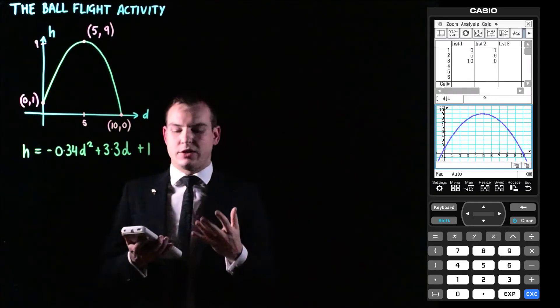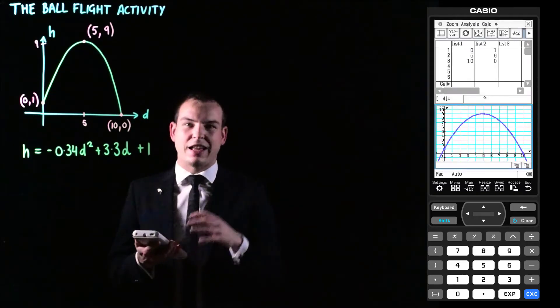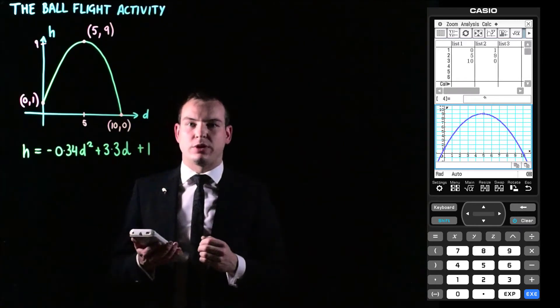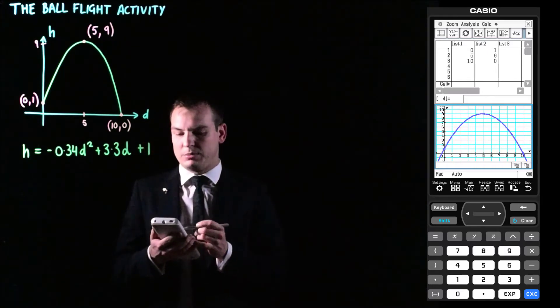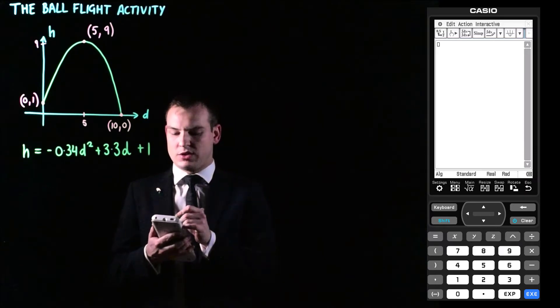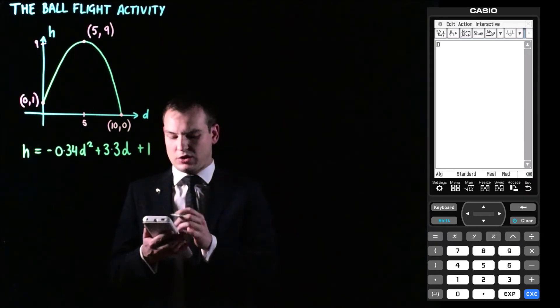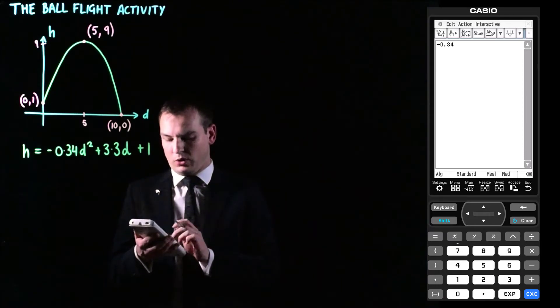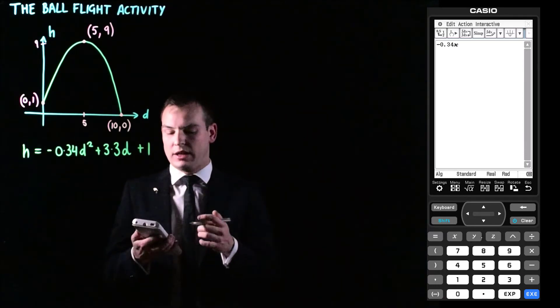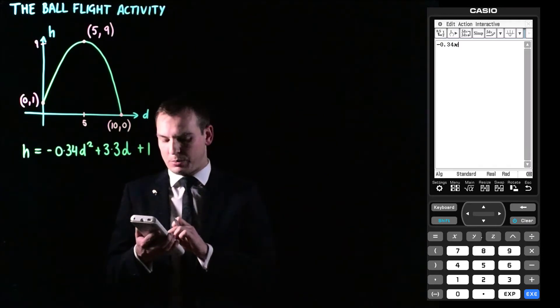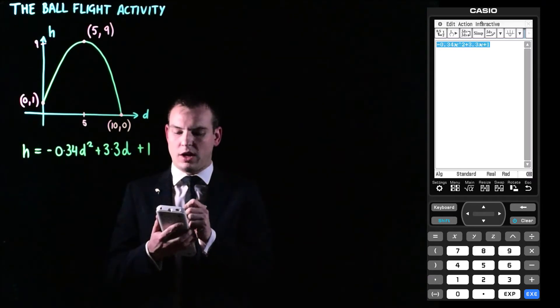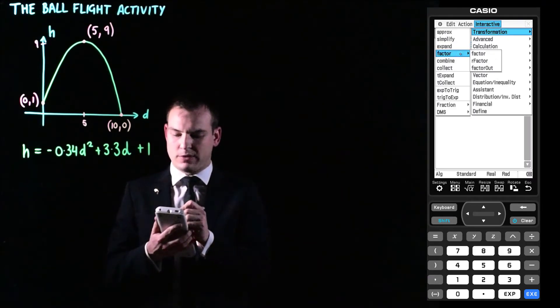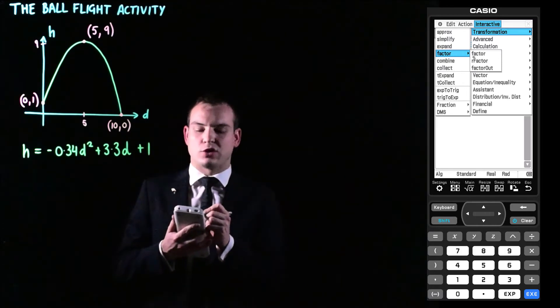When we hit OK on our calculator screen, it actually graphs that parabola. And that's a similar shape to what we've got drawn up here, which is a really good thing to note. What I'm going to do, though, is I'm now going to go into the main menu. And I'm just going to type in that equation. So what I'm going to do is I'm going to go and type in negative 0.34. And I'm going to use X and Y for this equation or just X at the moment to represent D. So we're going to have negative 0.34 X to the power of 2. Then we're going to have plus 3.3 X plus 1. So now we can highlight that and go Interactive Transformation Factor. And we could use Factor or R Factor to try and factorize this.